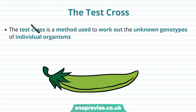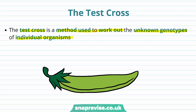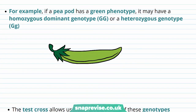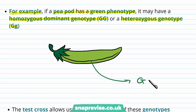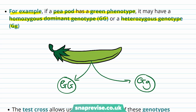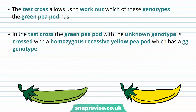The test cross is slightly different. The test cross is a method we use to work out the unknown genotypes of individual organisms. For example, if we have a green pea pod, it could have one of two genetic make-ups: a homozygous dominant genotype — two large Gs — or a heterozygous genotype, large G, little g. Because it's green, we have no idea whether it would be large G, little g or large G, large G, since both result in the green colour. The test cross allows us to determine which genotype the green pea pod has.